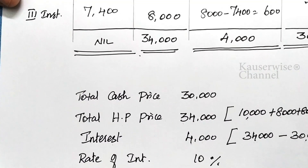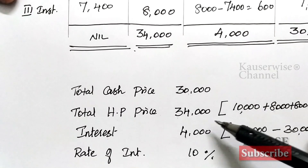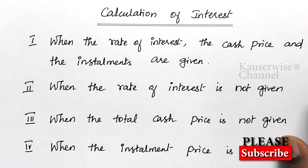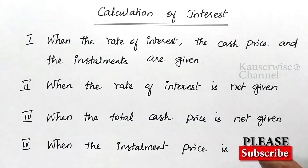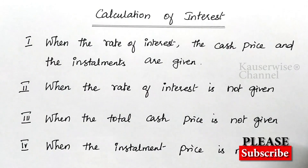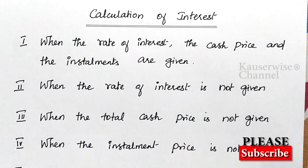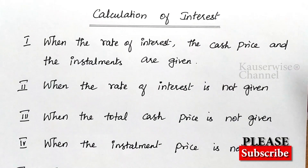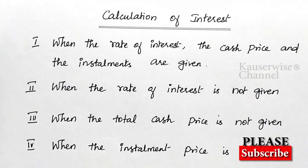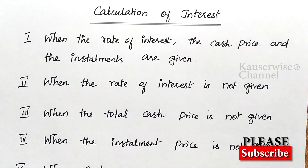This is the way to calculate interest when cash price, hire purchase price, and the rate of interest are given. We have seen the first of the 5 different cases of calculation of interest in hire purchase. In the next video, we will see the second case — calculation of interest when the rate of interest is not given. Please check the description box to find the links. Hope you liked the video. Please subscribe and share with your friends. Thank you.